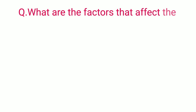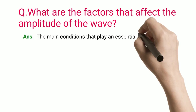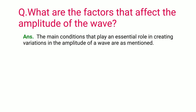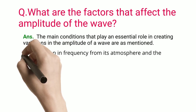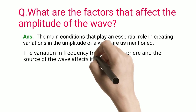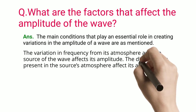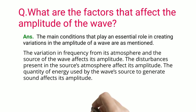What are the factors that affect the amplitude of the wave? The main conditions that play an essential role in creating variations in the amplitude of a wave are: the variation in frequency from its atmosphere and the source of the wave affects its amplitude; the disturbances present in the source's atmosphere affect its amplitude; and the quantity of energy used by the wave's source to generate sound affects its amplitude.